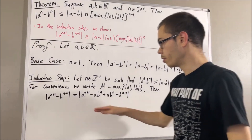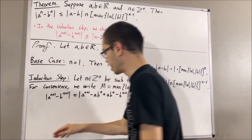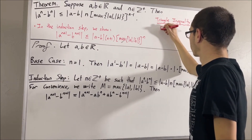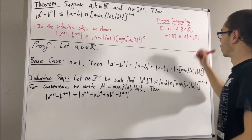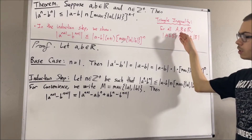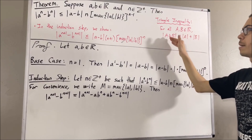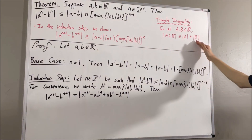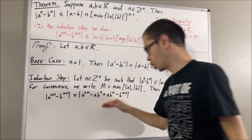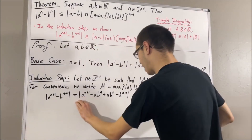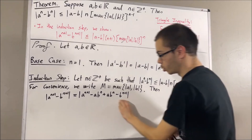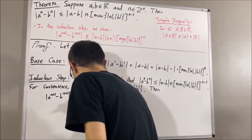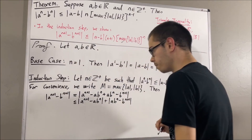Now we're going to apply the triangle inequality, which says the following: for all real numbers capital A and capital B, the absolute value of capital A plus capital B is less than or equal to the absolute value of capital A plus the absolute value of capital B. Applying this inequality into our proof, the absolute value of this entire expression is less than or equal to the absolute value of this term plus the absolute value of this term.